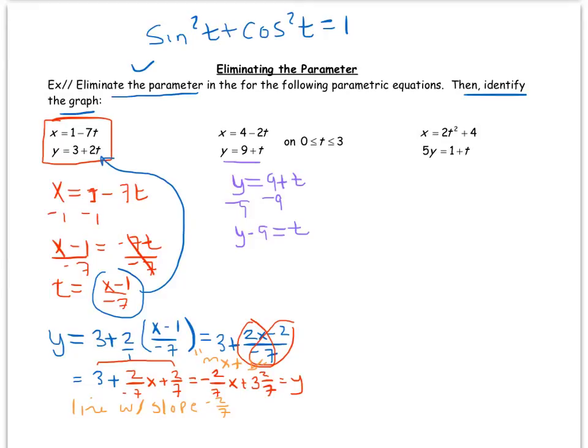And when I do that, I get x equals 4 minus 2 times (y minus 9), and then this becomes 4 minus 2y plus 18.